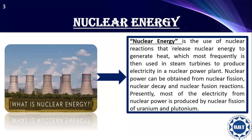First of all, we see what is nuclear energy. It is the use of nuclear reactions that release nuclear energy to generate heat, which most frequently is then used in steam turbines to produce electricity in a nuclear power plant. This electricity is basically generated by two types of reactions. Presently, most electricity from nuclear power is produced using two radioactive isotopes: uranium and plutonium.